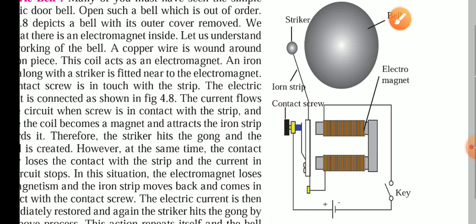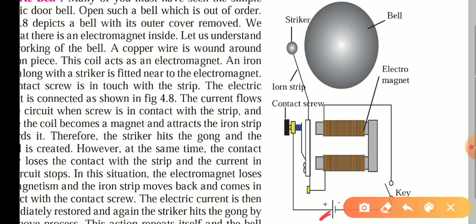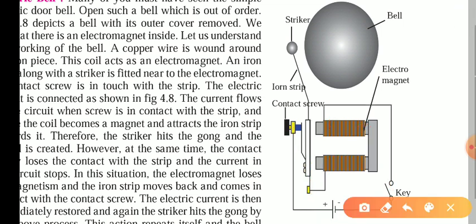To understand the exact working of the electrical bell: the source of energy is connected via wire to a contact screw, then there is a metal strip, and here we have the electromagnet — a U-shaped structure with wire wound around it. This wire goes back to the key and then the source. When we switch on, electric current passes through the metal strip and through the wire, making it an electromagnet, which starts attracting the metal strip so the hammer strikes the gong.